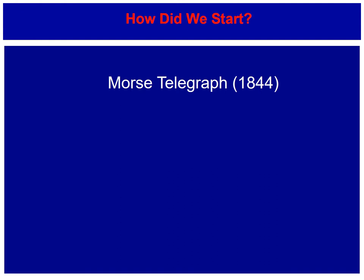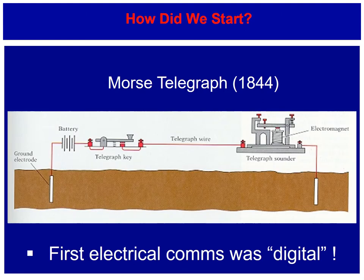So how did electrical communications all start? We have to go back to the Morse telegraph in 1844. The Morse telegraph was simply a circuit that allowed current to flow through an electromagnet. As the telegraph key was pressed down or up, it pulled the electromagnet on the telegraph sounder and gave you the long and short symbols familiar with Morse code. Of course, the Morse telegraph was actually digital — so the first electrical communications was digital and not analogue, which is rather strange.